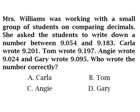Our problem states Ms. Williams was working with a small group of students on comparing decimals. She asked the students to write down a number between 9.054 and 9.183, or we can say 9.054 thousandths and 9.183 thousandths. Carla wrote 9.201, Tom wrote 9.197, Angie wrote 9.024, and Gary wrote 9.095. Who wrote the number correctly? A is Carla, B is Tom, C is Angie, D is Gary.